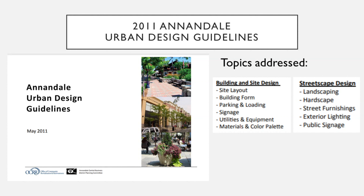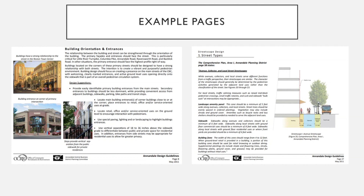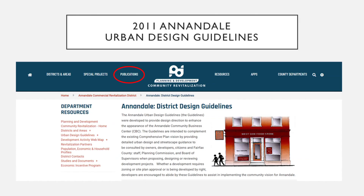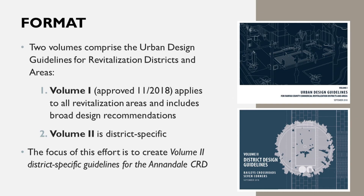The existing Annandale Urban Design Guidelines were created in 2011 following an update to Annandale's Comprehensive Plan. The guidelines were about 25 pages in length covering topics such as building and site design and streetscape design. The document was predicated mostly on the Comprehensive Plan and the Columbia Pike Streetscape Plan from the 1990s. You can also review a copy of the 2011 document on the Revitalization website at www.fcrevite.org. Urban Design Guidelines for Commercial Revitalization Districts and Areas can also be found on the Revitalization website under the Publications tab.